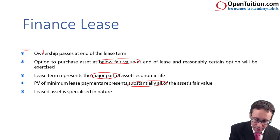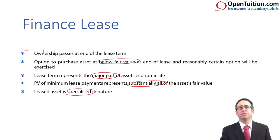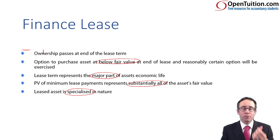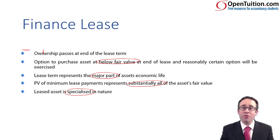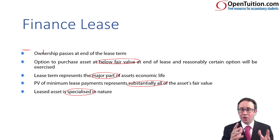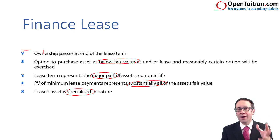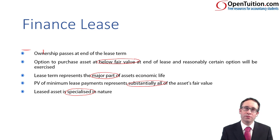The last scenario is that the asset being leased is specialised in nature, meaning only the lessee can use it. Therefore, the lessee will have the risks and the lessee will have the rewards. If those risks and rewards are transferred to the lessee, it is a finance lease. You need to be on the lookout for those scenarios in any narrative style question. If it's computational, you'll be told it is a finance lease. In a narrative style question, you'll have to identify one or a combination of those scenarios.